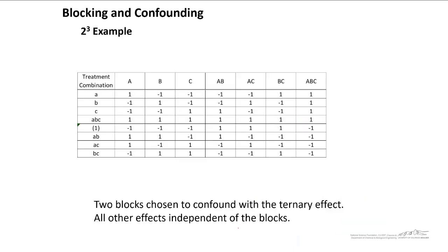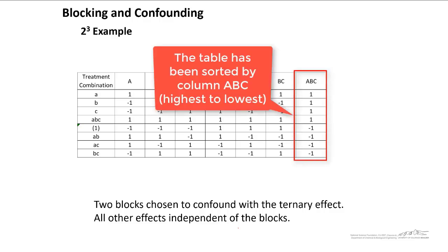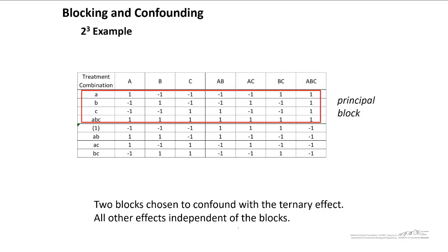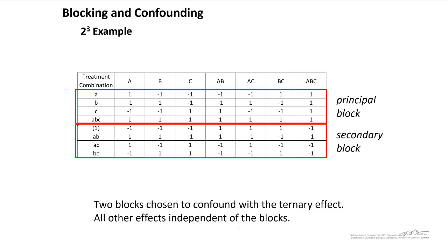The way that we choose these blocks, we set up our two-cube table. And then I've already sorted the ABC column. I've got the ones on the top and the negative ones on the bottom. And so what we do is we assign to a principal block, the top four, and the bottom four, where ABC are all negative for those ones. We assign those to the secondary block. And again, by doing this, we're confounding the blocking effect with the ternary effect, the highest order interaction, and all other effects are independent of the blocks.